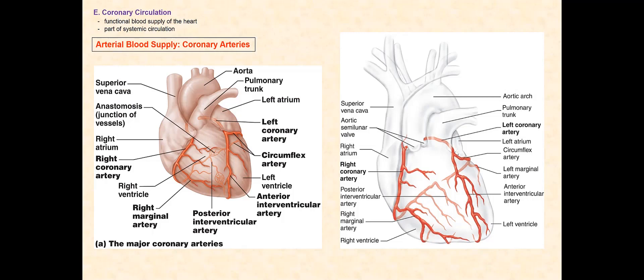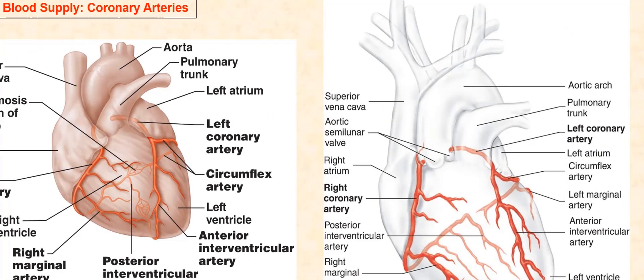We will first consider the arterial blood that supplies the wall of the heart through arteries called the coronary arteries. The two main coronary arteries that will further branch to supply the wall of the heart are the right coronary artery and the left coronary artery. They branch off the aorta at the aortic root, specifically at the aortic sinus, where we can find two openings: an opening for the left coronary artery and an opening for the right coronary artery.